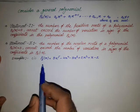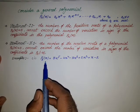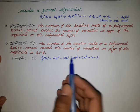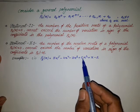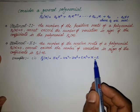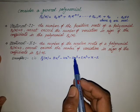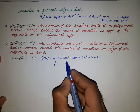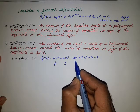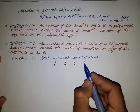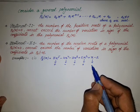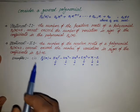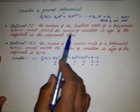We take a 5th degree polynomial: 5x⁵ − 4x⁴ − 3x³ + 2x² + x − 2. We look for the variation in sign of the coefficients. The coefficient of the first term is positive, the second is negative, the third is negative, the fourth is positive, the fifth is positive, and the last term is negative.